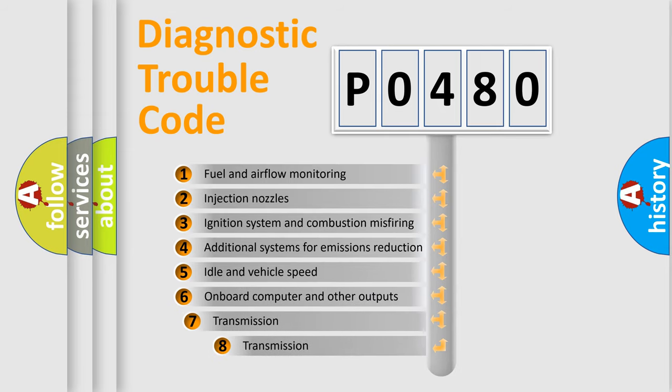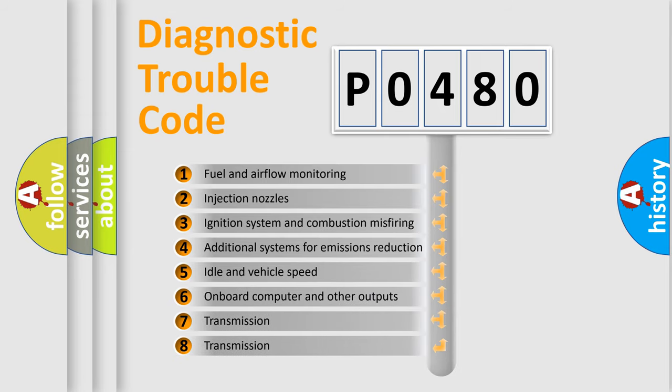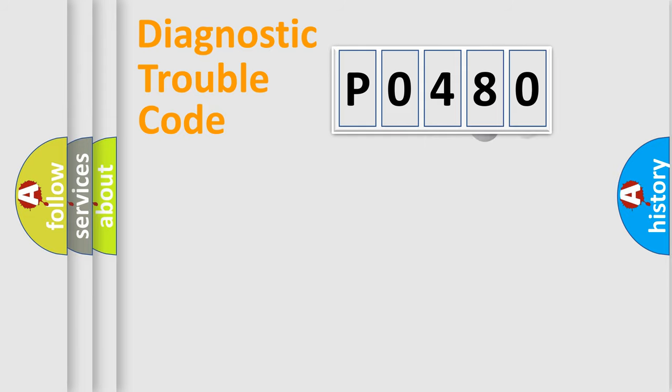The third character specifies a subset of errors. The distribution shown is valid only for the standardized DTC code. Only the last two characters define the specific fault of the group.